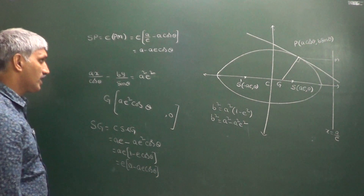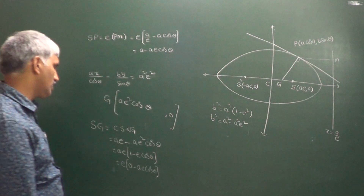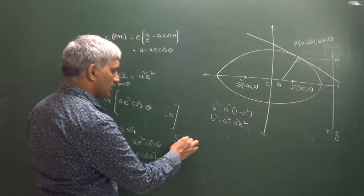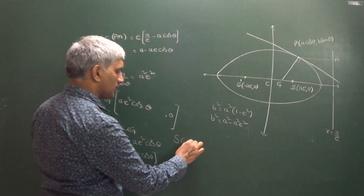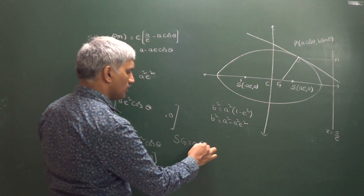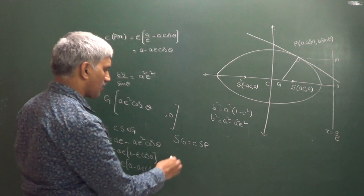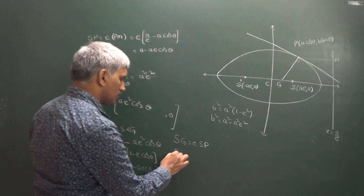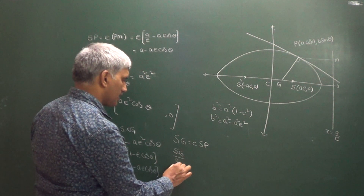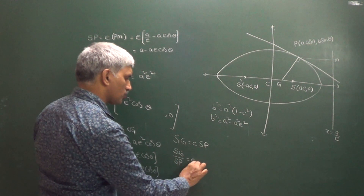We can further write this as E into (A minus AE cosθ), and A minus AE cosθ is nothing but SP. Therefore SG = E into SP, which gives us SG divided by SP equals E.